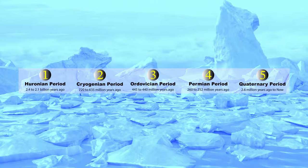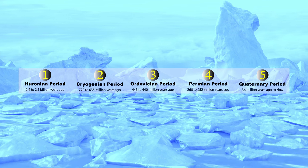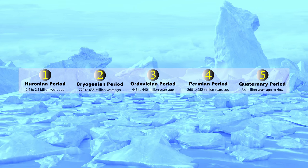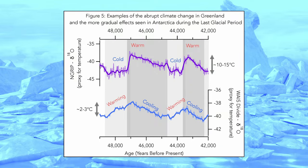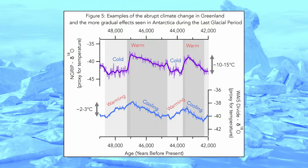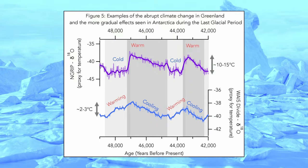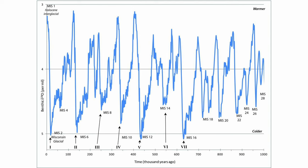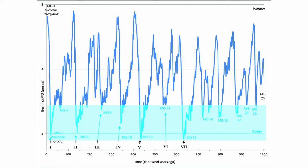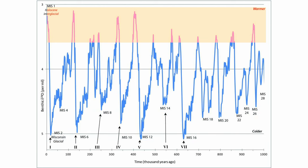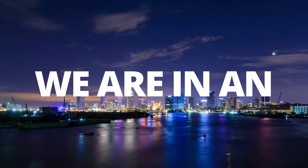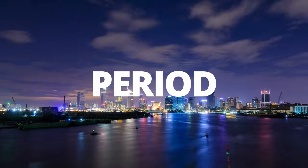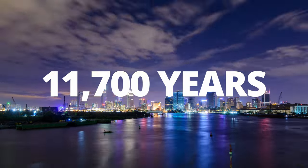Each of these major ice ages has many minor ice ages — times when there is smaller temperature fluctuation. But in between the ice ages, we have interglacial periods, when there is a substantial temperature rise. Presently, we are in an interglacial period that has lasted for the past 11,700 years.